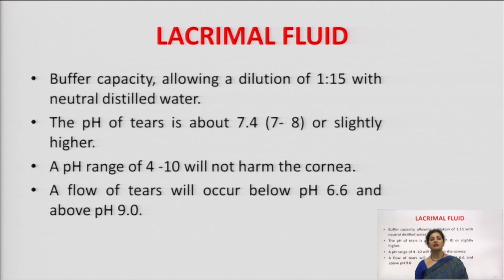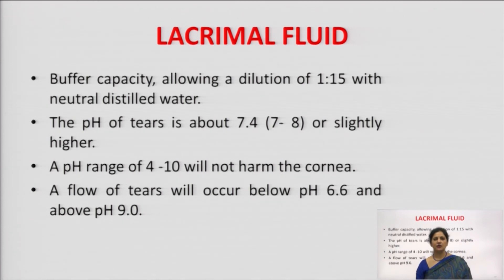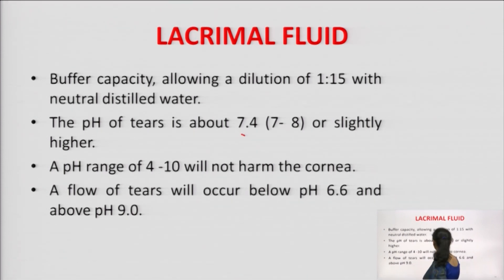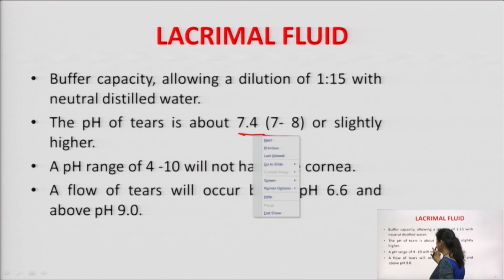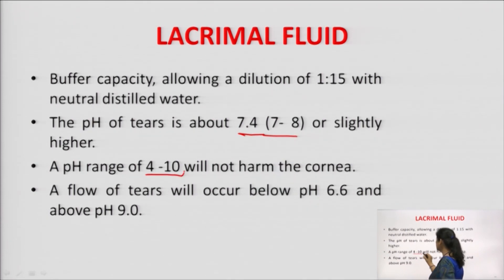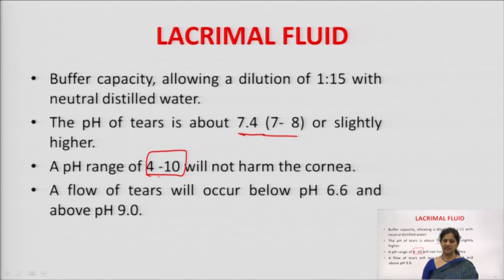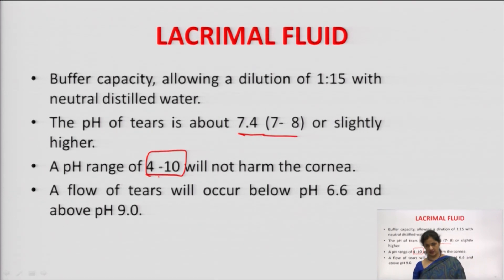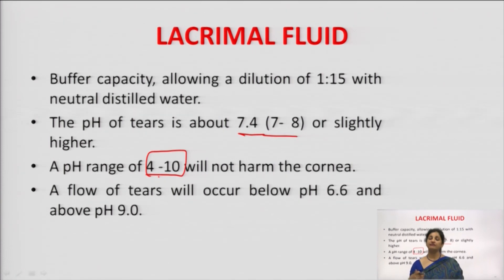Lacrimal fluid present in our eyes also acts as a very good buffer, with a buffer capacity allowing dilution of 1 to 15 with neutralized distilled water. The pH of tears is about 7.4, with a range of 7 to 8 or slightly higher. A pH range of 4 to 10 will not harm the cornea; however, a flow of tears occurs below pH 6.6 and above pH 9.0. Solutions used in ophthalmic preparations must be isotonic.